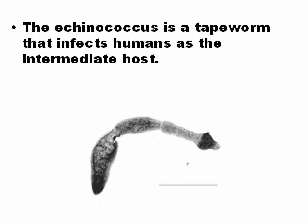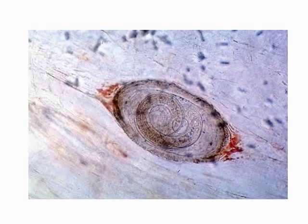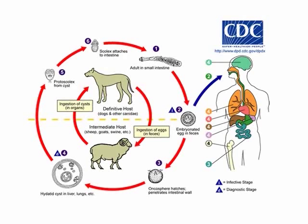Echinococcus granulosus is a tapeworm, a parasite that infects humans. Transmission to the human occurs through the dog and the sheep. The human is not the normal host — the normal host is the dog and the sheep. Human infection occurs because of contamination.